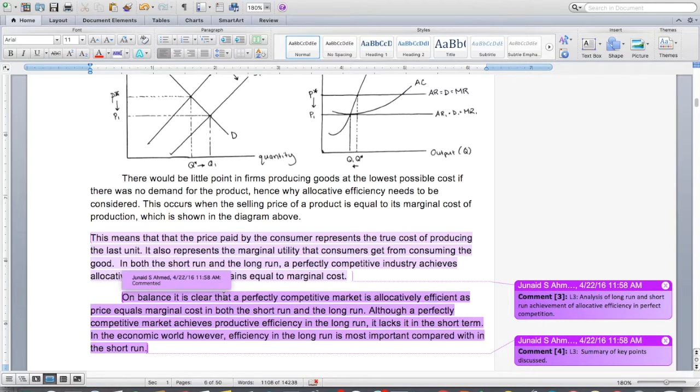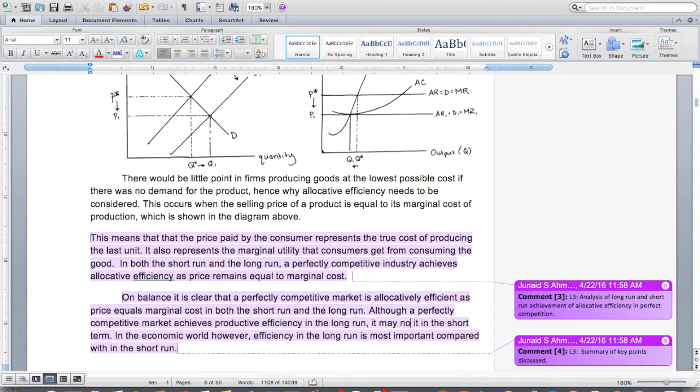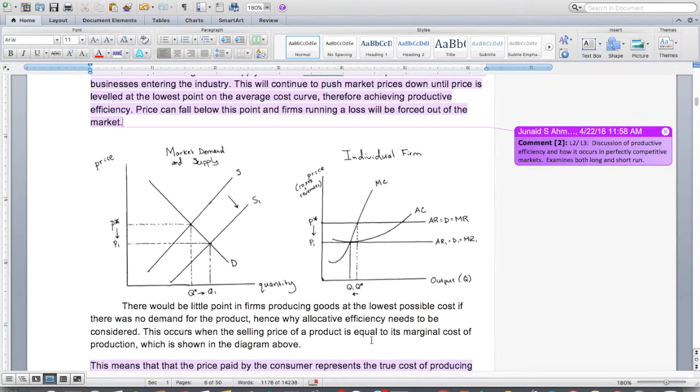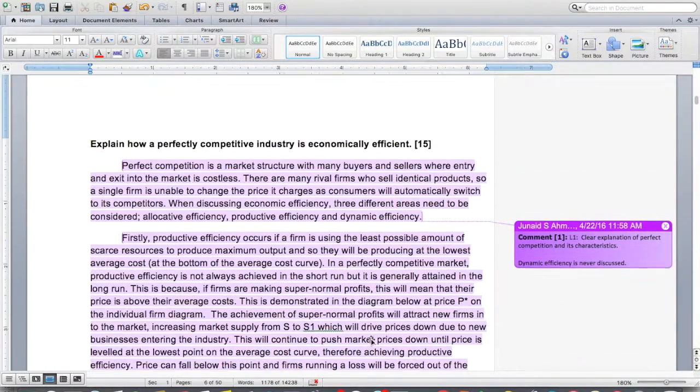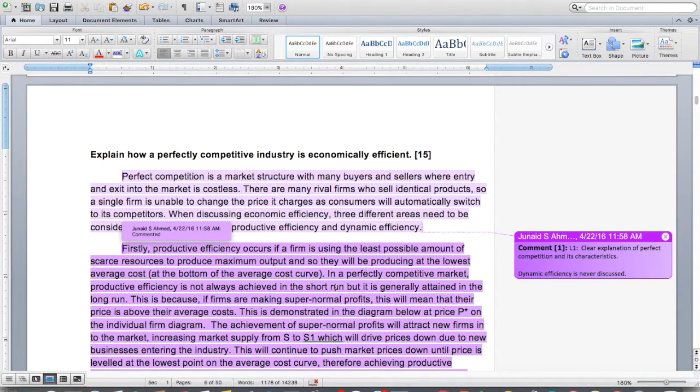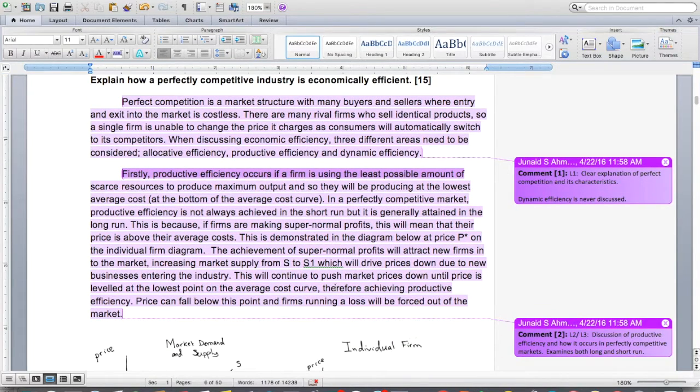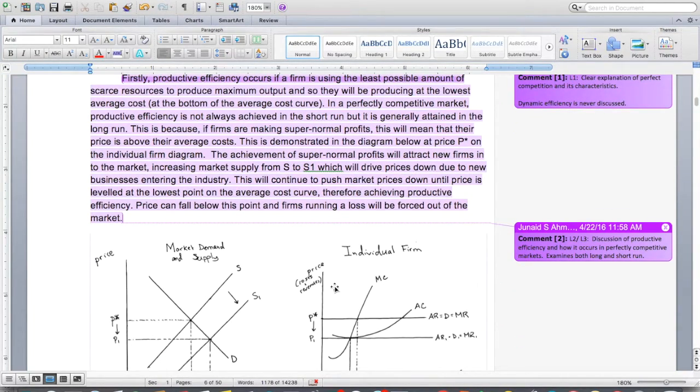On balance, it is clear that a perfectly competitive market is allocatively efficient as price equals marginal cost in both the short run and long run. Although a perfectly competitive market achieves productive efficiency in the long run, it may not in the short term. In the economic world, however, efficiency in the long run is most important compared with the short run. That's a general statement, but I would say this person did a pretty good job of explaining productive and allocative efficiency.